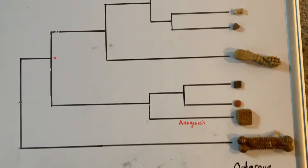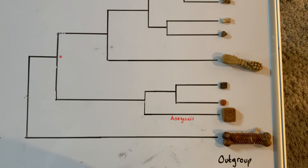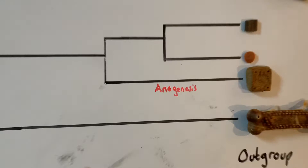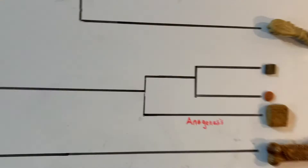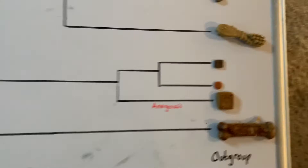So last little bit: anagenesis, or evolution within a single lineage over time. So like this could be considered anagenesis, where this would be cladogenesis. Same with up here — anagenesis, and then cladogenesis and cladogenesis. Cladogenesis is the splitting of one lineage into two.